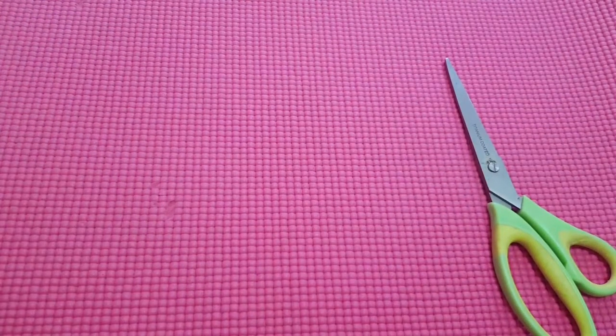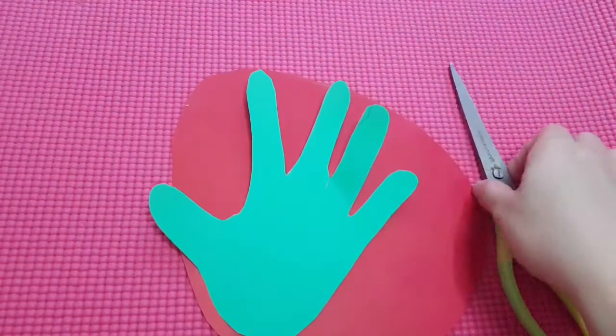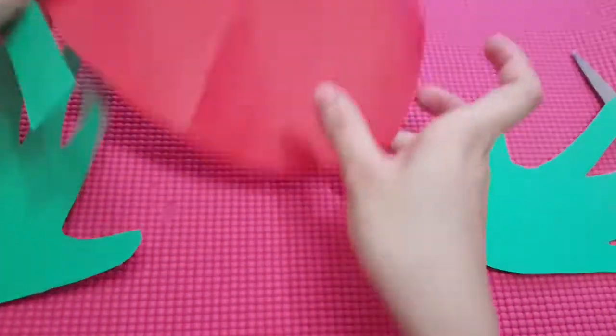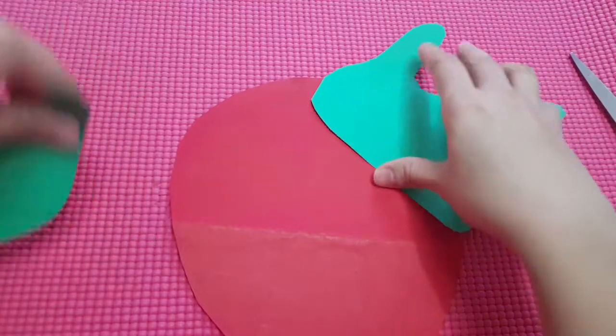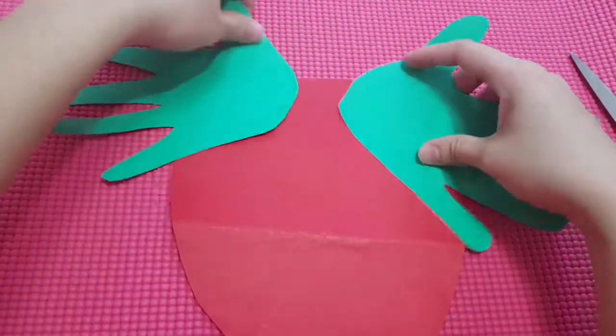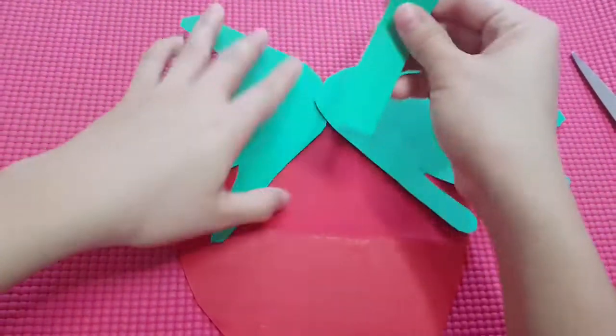Now it's time to bring out those items that you just cut out. The red oblong shape here will serve as the body of the strawberry, while the two handprints are the leaves and the long rectangle shape is the stem.